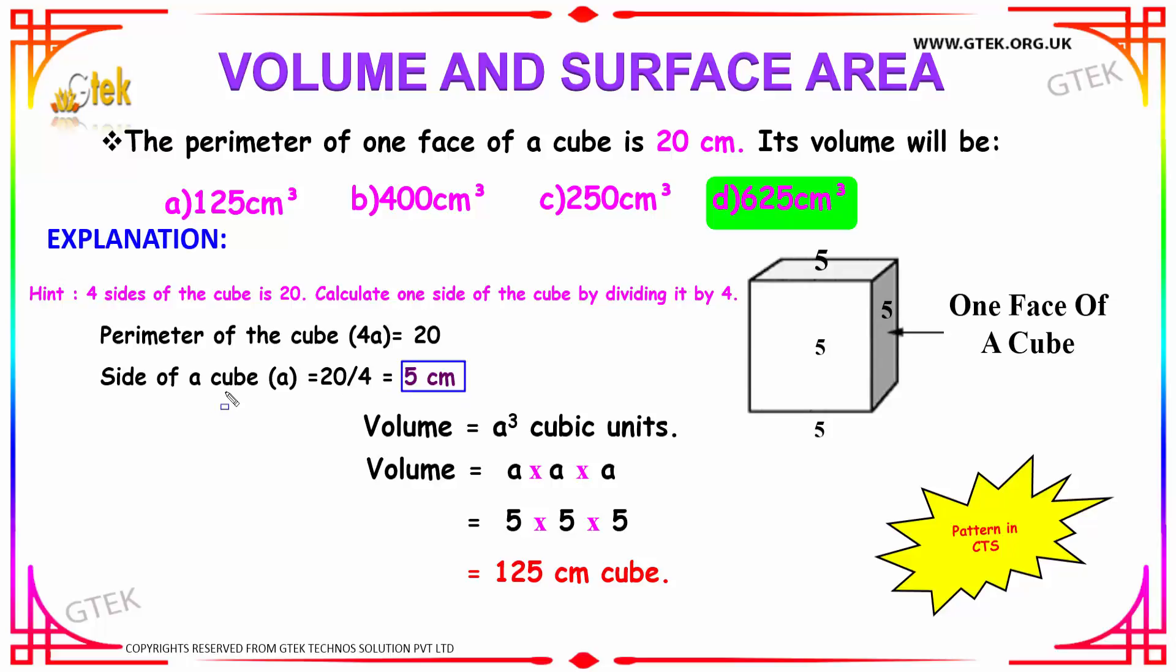So you have got the side of your cube, that is a. Now it is simple to find the volume of the cube. You simply have to substitute your side a in the formula a³, that is a × a × a.